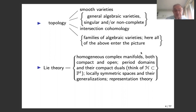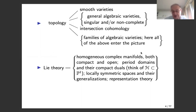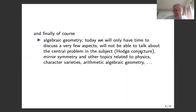Lie theory is again an area where Hodge theory has had some relations. The original construction of the discrete series representations of real semi-simple Lie groups done by Wilfred Schmitt was based on Hodge-theoretic considerations. There have since been other constructions of the discrete series, but the first geometric realizations had their origins from Hodge theory. And finally, algebraic geometry — that's the main area where Hodge theory interacts with other aspects of mathematics. I'll say a few words about that, especially the parts of algebraic geometry that relate to moduli.